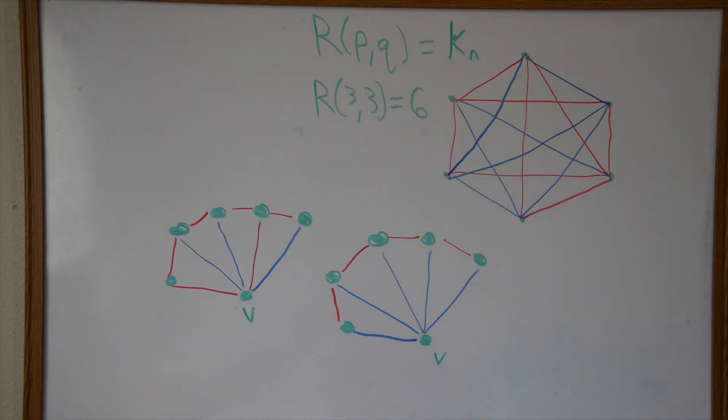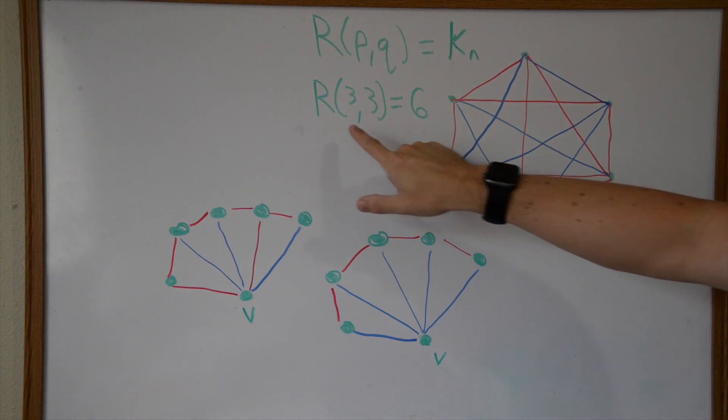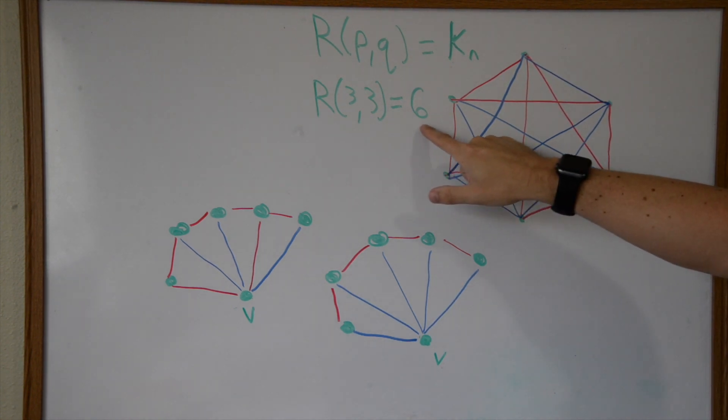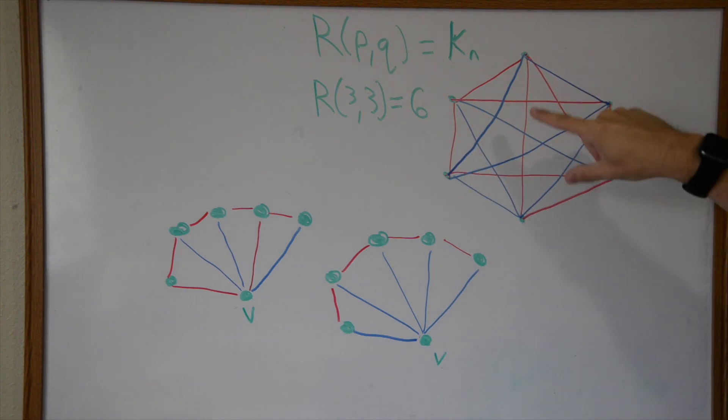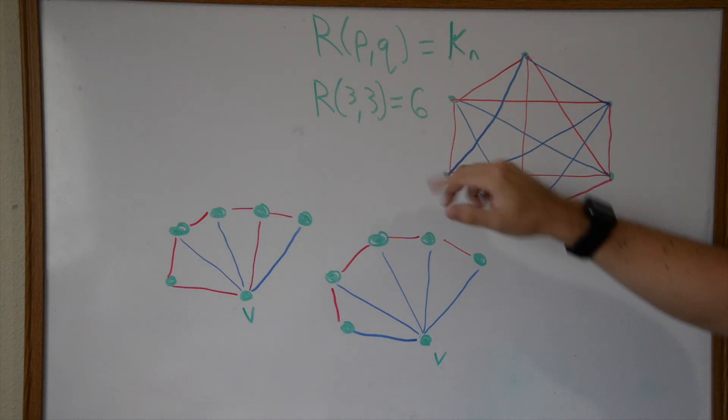I'm going to show you that the minimum complete graph size in order to have either a blue or red triangle is going to have to be a complete graph on six vertices, which I've already drawn here. We're going to assume, even though I know it for a fact, we're going to assume that K5, the complete graph on five vertices.